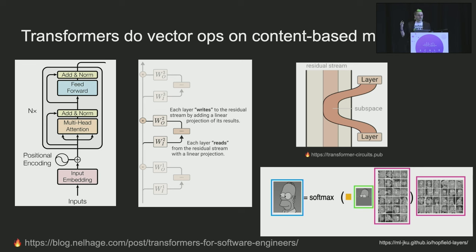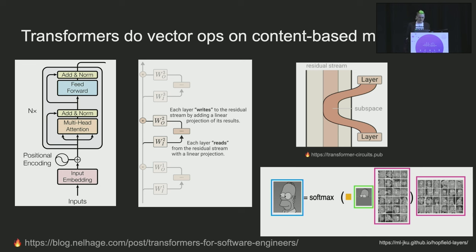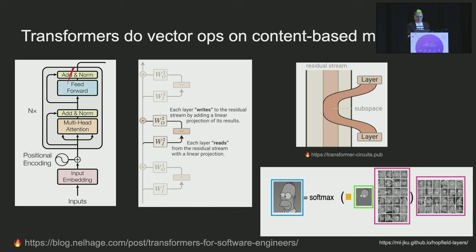So Transformers are a new computer. Are they doing Boolean logical operations? If you want to get technical, yes, because when you go down they are implemented on the computers we already have. But let's follow principles of abstraction and say what is the natural way to express the operations that Transformers do. Transformers do vector operations on content-based memory. The classic Transformer architecture diagram, and a reorientation of it from the folks at Anthropic, shows that when you think about the operations of the Transformer, you do some attention and then some feed-forward neural network and then create the outputs.